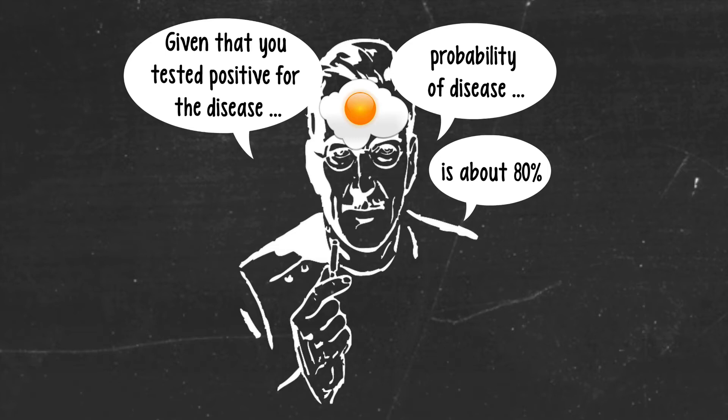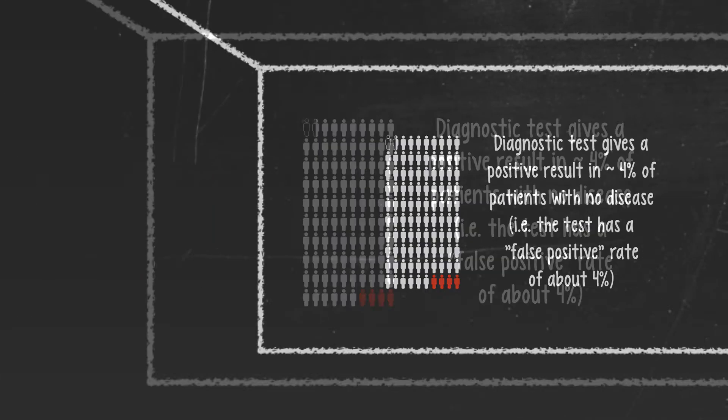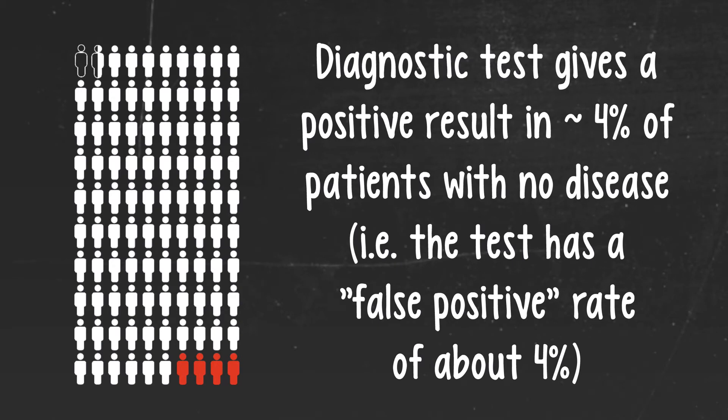He's actually way off in his estimate and this is because he's failed to consider a very important question relating to the test performance. We know that the test is 80% accurate in people who have the disease, but how does it perform in the other 98.5% of the people who do not have the disease? So let's say for the purposes of our hypothetical example that the diagnostic test only returns a positive result in about 4% of people who do not have the disease. Scientists call these false positives, by the way.